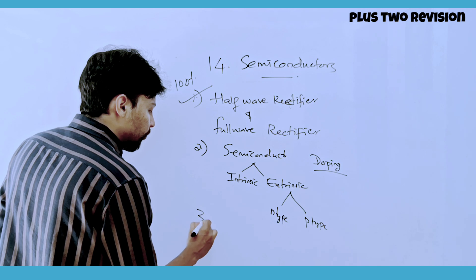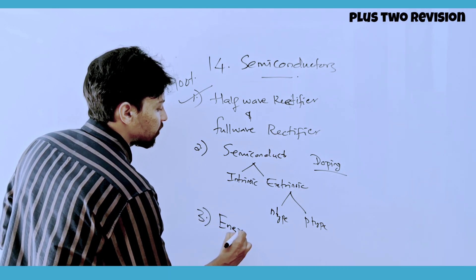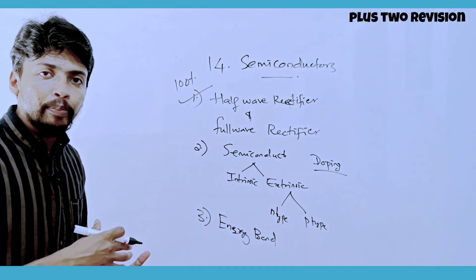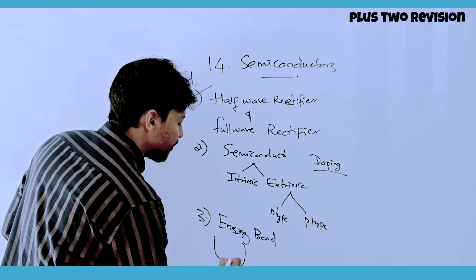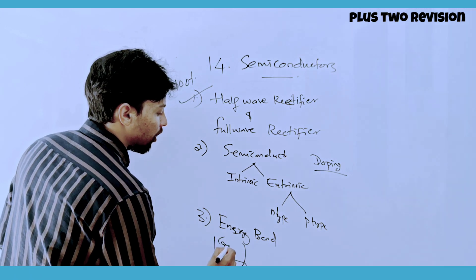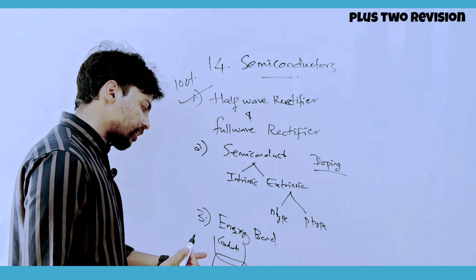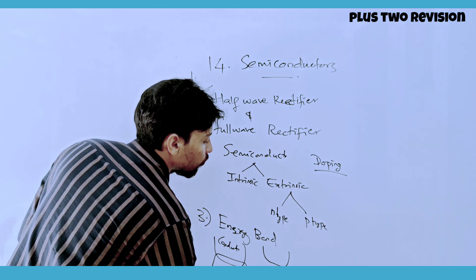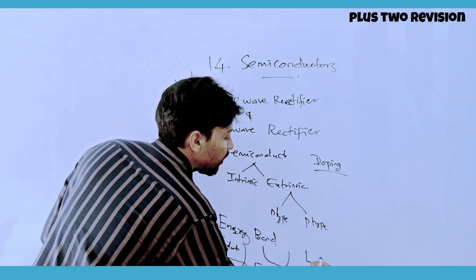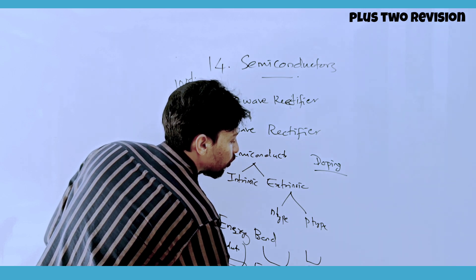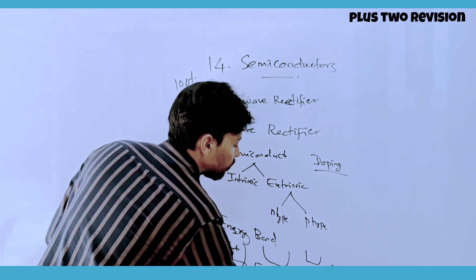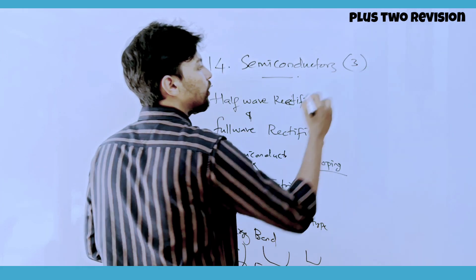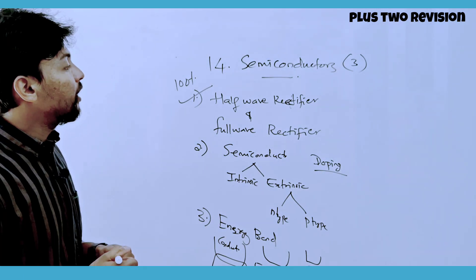The third topic is the energy band diagram. For conductors, the valence band and conduction band are overlapped. For insulators, the energy gap is large (in electron volts). For semiconductors, the energy gap is smaller. This is the 3rd chapter and an important topic.